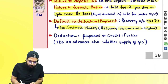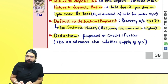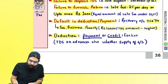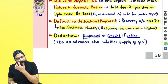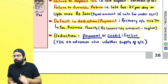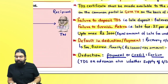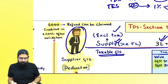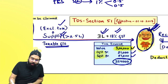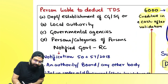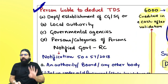When does the government department have to deduct TDS? On payment or credit, whichever is earlier. This means if an advance is being paid, TDS must be deducted on the advance as well.